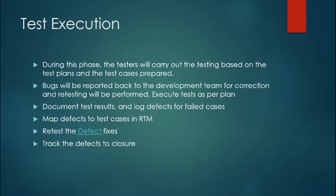Test Execution is the second-to-last phase. In this phase, the tester carries out testing based on the test plan and prepared test cases. Bugs identified during execution are reported to the development team, retested, and test cases are executed as per the plan. The tester also documents all test results and logs defects for failed test cases.